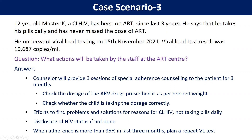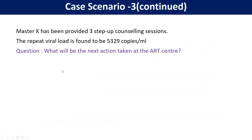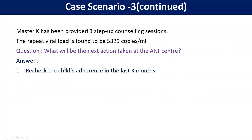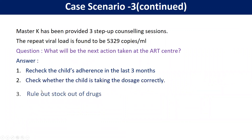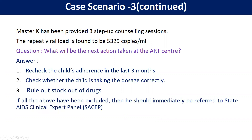The viral load was 10,000 copies. After 3 months it came out to be 5,000. What are we going to do? We recheck the child's adherence over the last 3 months, whether the doses are being taken correctly, and rule out stock-out of drugs. If everything is found to be fine — there is no adherence issue — then this is the time we should immediately refer the child to a higher center such as a Pediatric Center of Excellence.